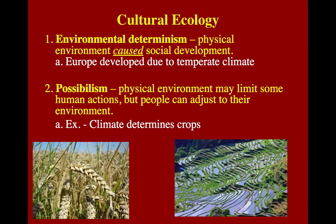Lastly, cultural ecology — environmental determinism. A lot of people get these mixed up. Environmental determinism is where the physical environment caused social development. Europe became developed because they had a temperate climate — they weren't always fighting the weather, so they had longer periods of time to work on farming, agriculture, and eventually industry. Possibilism is where the physical environment may limit some human actions, but people can adjust to their environment. For example, we're at too high an elevation in Park City so we can only grow certain types of crops, but as you move into more temperate climates, what's possible to grow changes. Environmental determinism is what caused social development; possibilism is what may limit some of your actions because of the climate you live in.